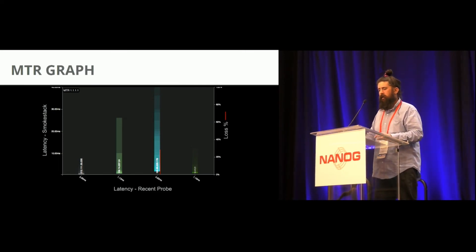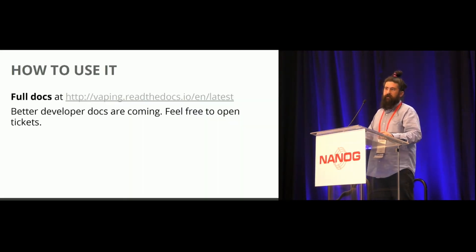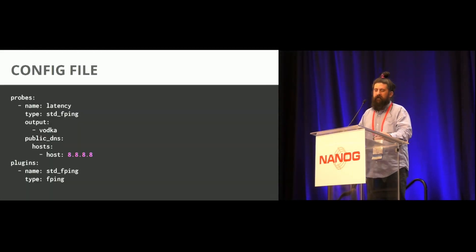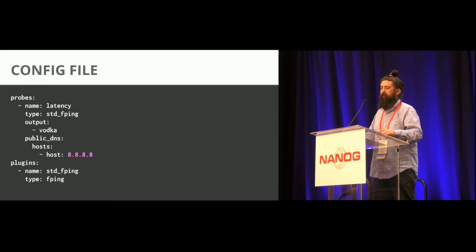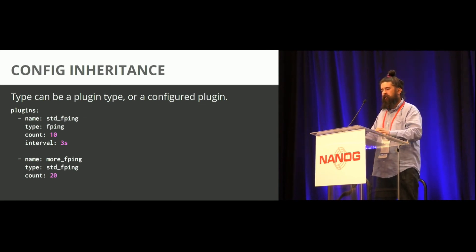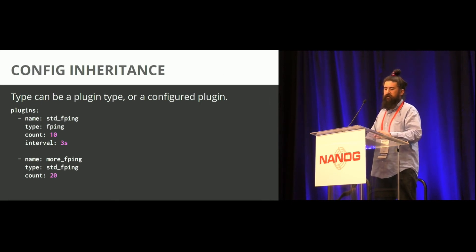The red line shows loss — if there's loss on a link it shows a red line, and in the future we'll have multiple stacks per hop. It's still really nice to look at connectivity; instead of an MTR terminal window, you can have it on a graph. We want to switch to a vertical layout and add hop history so it times out better. The documentation is actually pretty good compared to most of my other projects. The config is just YAML or JSON. You define a plugin, an output, and give it all the data. The inheritance is the cool part — for example, 'more fping' inherits from 'standard fping' and just changes the count, so you can build fairly complex configs really easily.